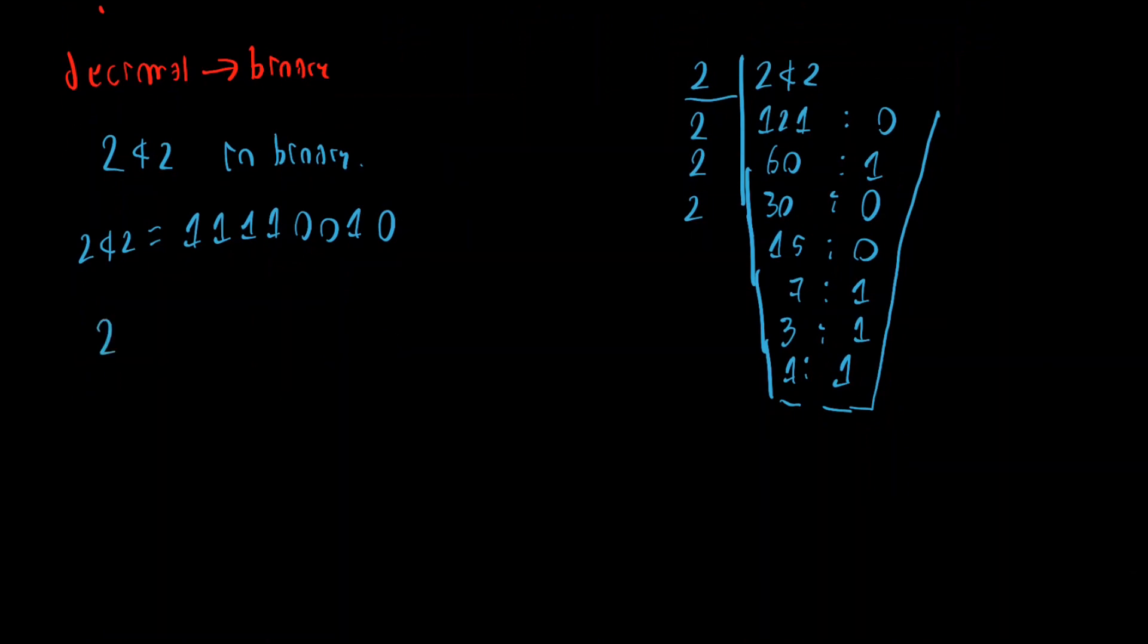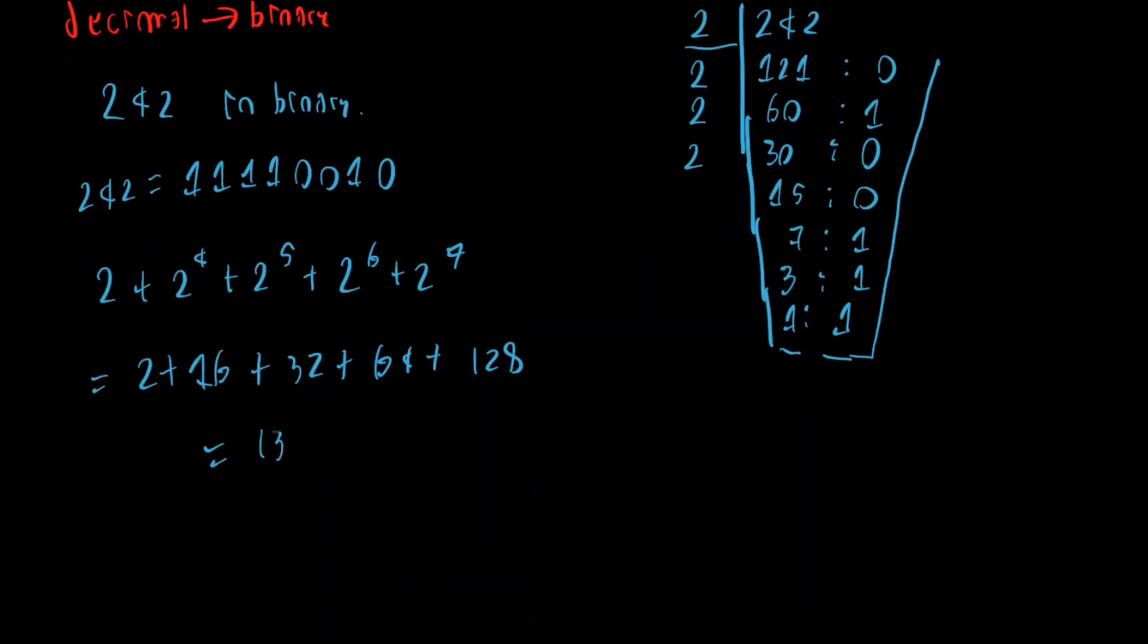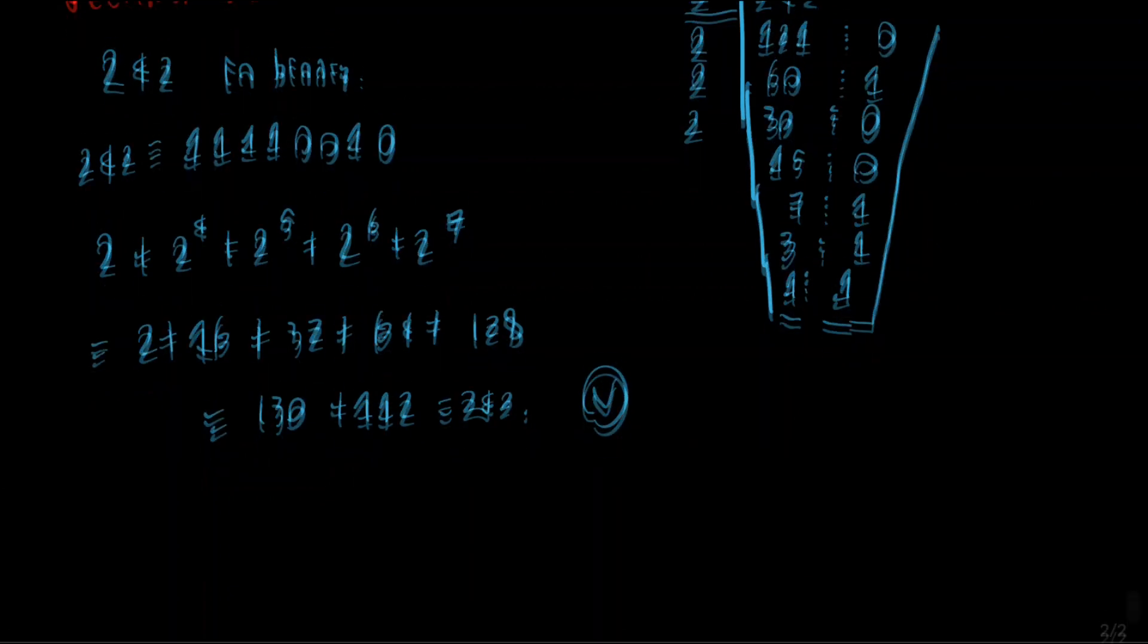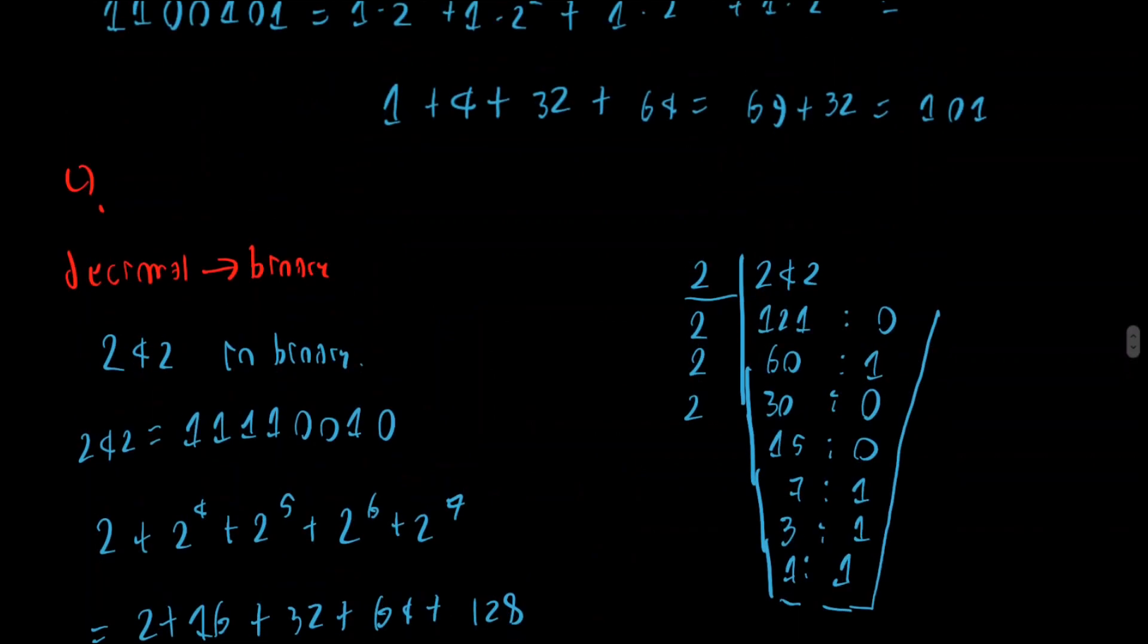So this will be 2 plus... And now I'm going to skip all the considerations about the places, because it's a little bit... Now I think we are familiar with the system a little bit more. And so this is the sum of 2 plus 2 to the 4th plus 2 to the 5th plus 2 to the 6th plus 2 to the 7th. So let's calculate this. It's not really hard. So 2 plus 16 plus 32 plus 64 plus 128. So by summing all the things, we get 130 plus 112. And what this is, this is precisely 242. So we have gotten our number back. So we have translated it into binary successfully.